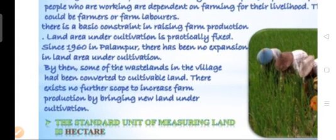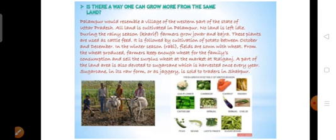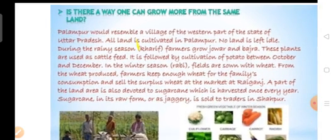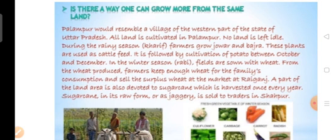Is there a way to grow more crops from the same land? Yes. The first method is by growing multiple crops on the same piece of land at the same time — that is the multi-cropping method. The second is crop rotation: in different seasons, farmers can grow different types of crops one after another on the same piece of land.